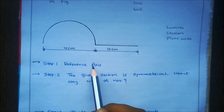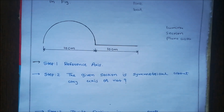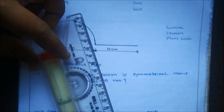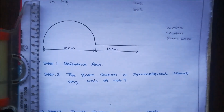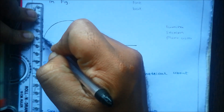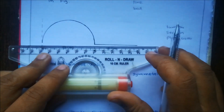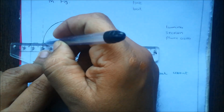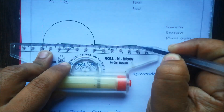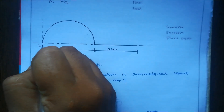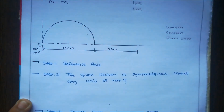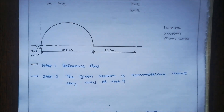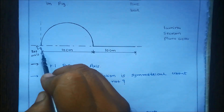In step number one, indicate the reference axis. The reference axis means the axis from which we find X-bar and Y-bar. We indicate the reference axis at the left side of the figure and at the bottom of the figure. So here the reference axis is at the left side and at the bottom of the figure, and from this axis we find the centroid of the wire.